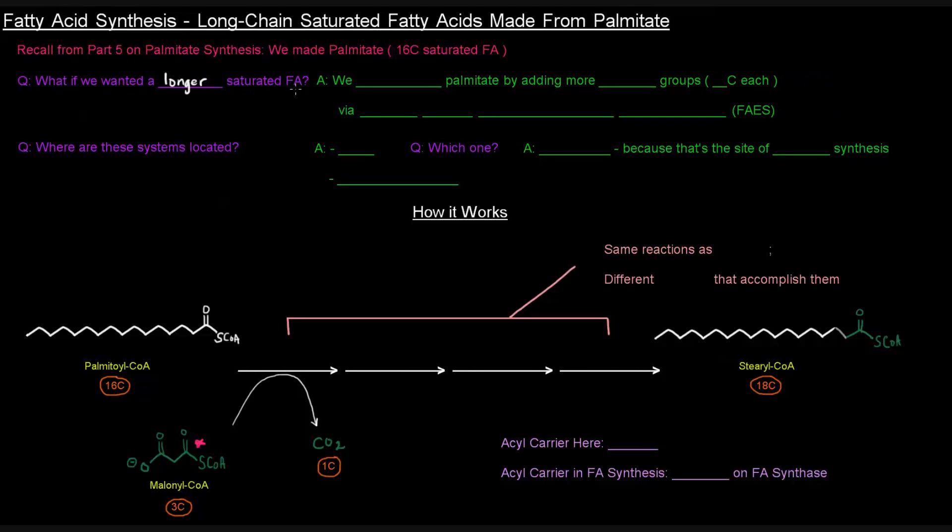Well, what we do is we would just have to lengthen palmitate by adding acetyl groups, which are going to be two carbons each. And this would be done via the fatty acid elongation system, abbreviated as FAES.